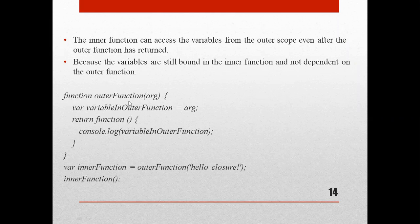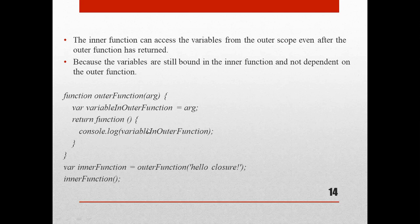Here you can see: a function named 'outer function' with an argument, one variable 'variable in outer function' equals argument, then the outer function returns a function — an anonymous function without a name. That anonymous function includes console.log of 'variable in outer function', so the argument is going to be printed. After closing the inner and outer functions, we have a variable called 'inner function' which equals 'outer function' called with the argument 'hello closure'. Then we call that inner function variable.